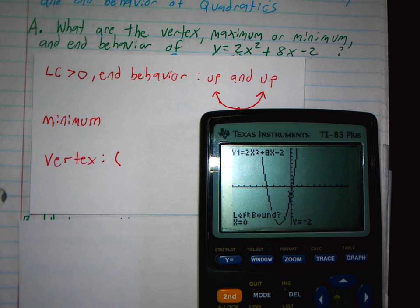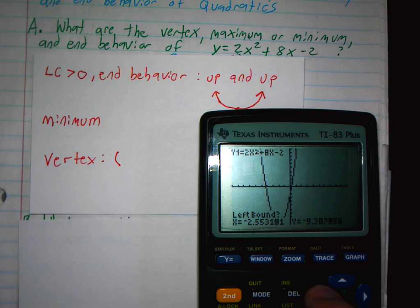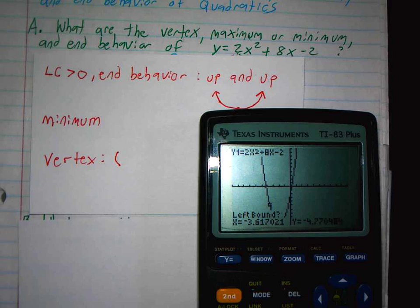So left bound, you're just going to use the left arrow to go to the left. Anywhere on the left, just somewhere on the left. You have to tell the calculator where to look. So go somewhere to the left, hit enter.